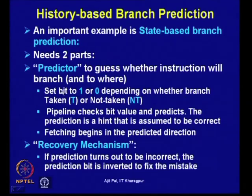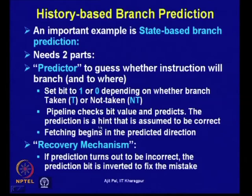When a branch is taken, a particular flag bit is stored as 1; if not taken, it is 0. The pipeline checks bit values and predicts based on previous history whether the branch will be taken or not. The prediction is a hint that is assumed to be correct — prediction may be correct or incorrect. If correct, we gain; if not correct, no gain. State-based branch prediction should also have a recovery mechanism: whenever the prediction turns out to be wrong, the prediction bit is inverted to fix the mistake.